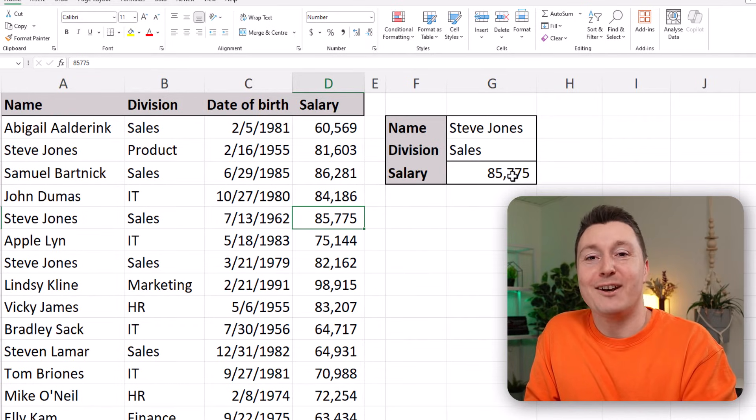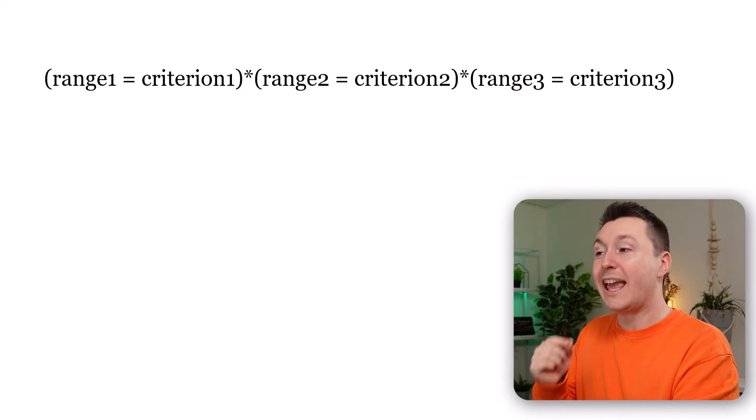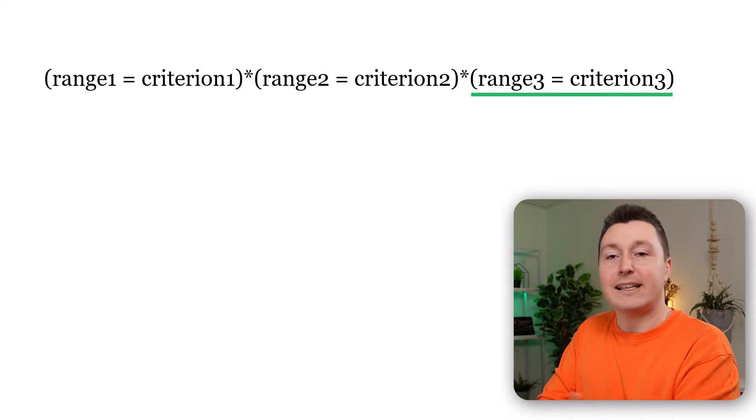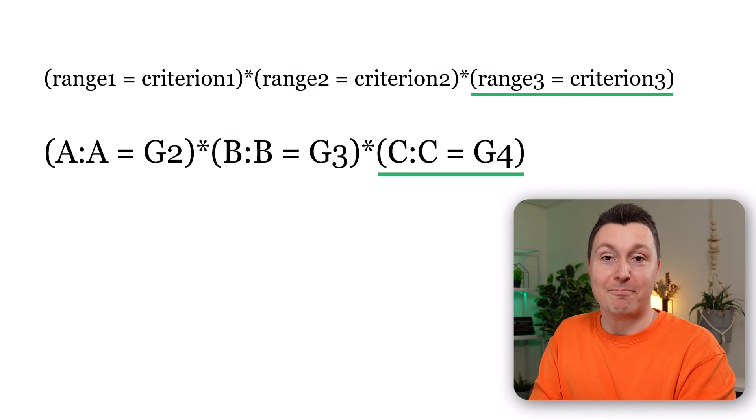This example used two criteria, but if you need three or more criteria you simply use the same criteria structure — just add an extra criterion with another multiplication sign and parenthesis. If you prefer simplifying things, you can achieve the same result with the Excel FILTER function. Another approach is to return multiple matches and then pick the one you need. Thanks for watching!